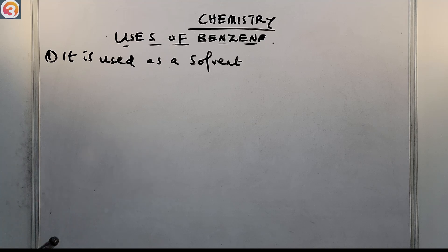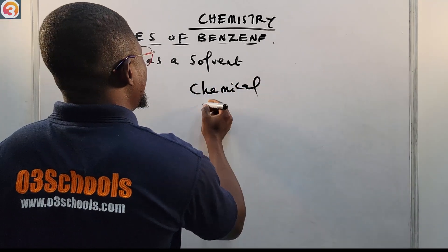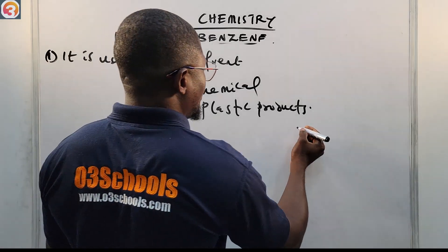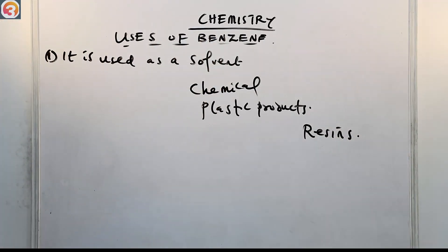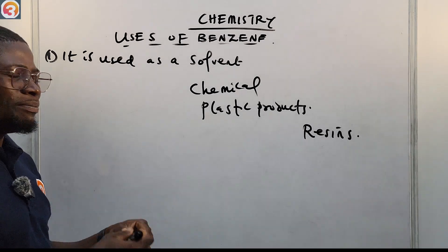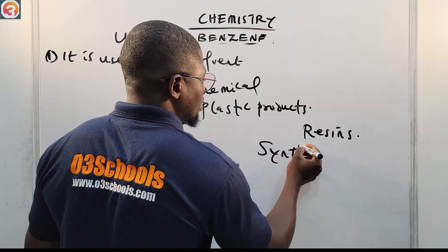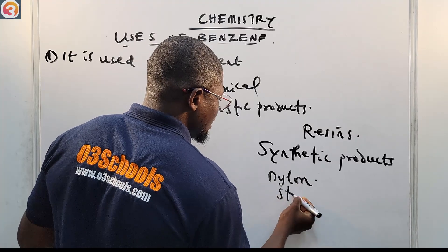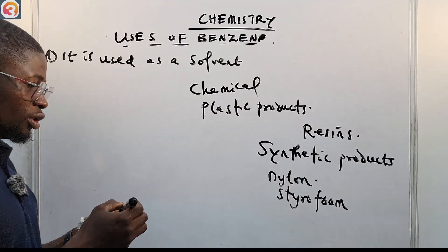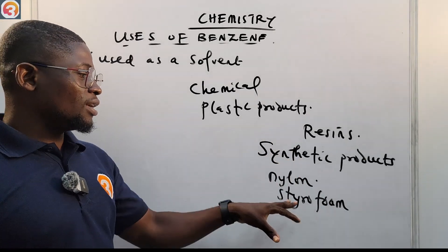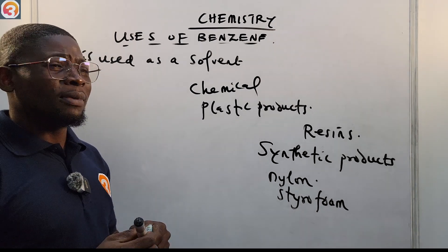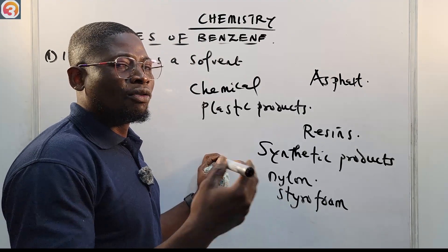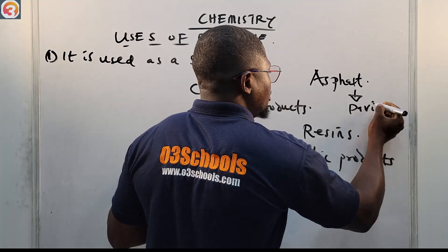Benzene is used in the manufacturing of chemical and plastic products — for example, resins. It is also used in the manufacture of synthetic products such as nylon and styrofoam. It is also very useful in the manufacture of asphalt, which is used by paving and roofing companies.